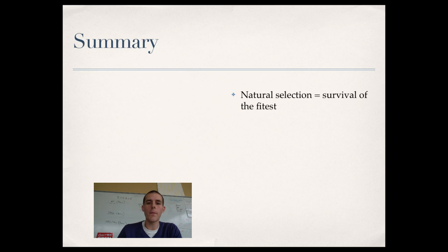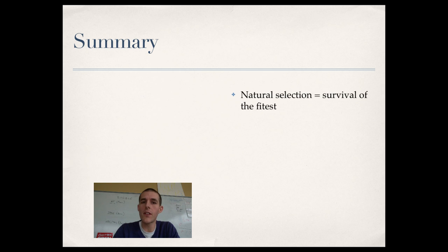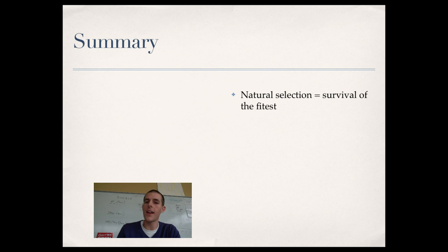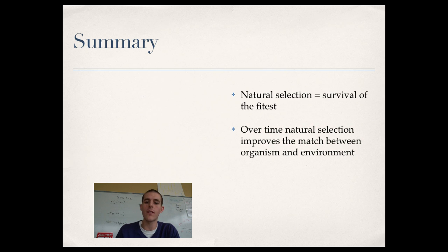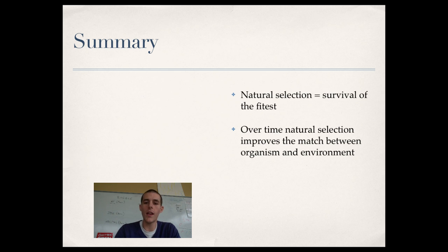In summary: natural selection equals survival of the fittest. Note that Darwin never used the term 'evolution' — he talked about descent with modification, meaning that over time a population of animals will diverge into different species as traits helping them adapt to the environment accumulate. Natural selection improves the match between organisms and their environment, so that over time organisms will become perfectly matched to live in that environment.